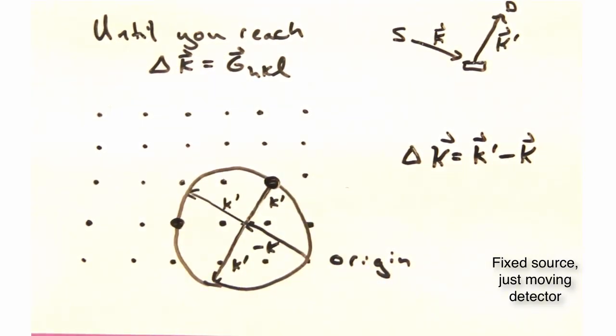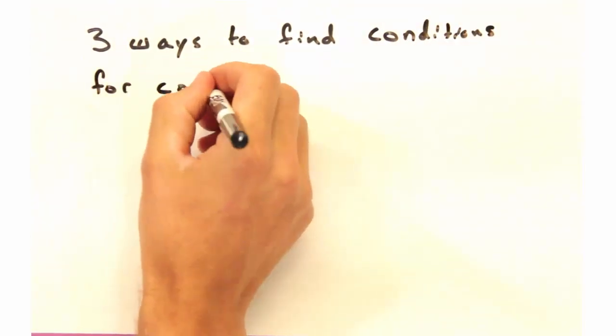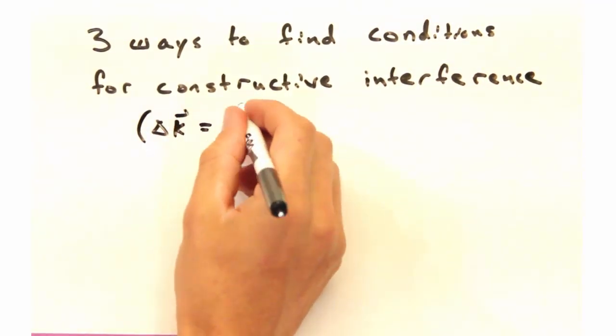But Eric, we only hit two reciprocal lattice points after moving the detector a considerable amount. Seems like we're not actually measuring much of a reciprocal space with our detector. Yeah, so there are three ways to find conditions for constructive interference.